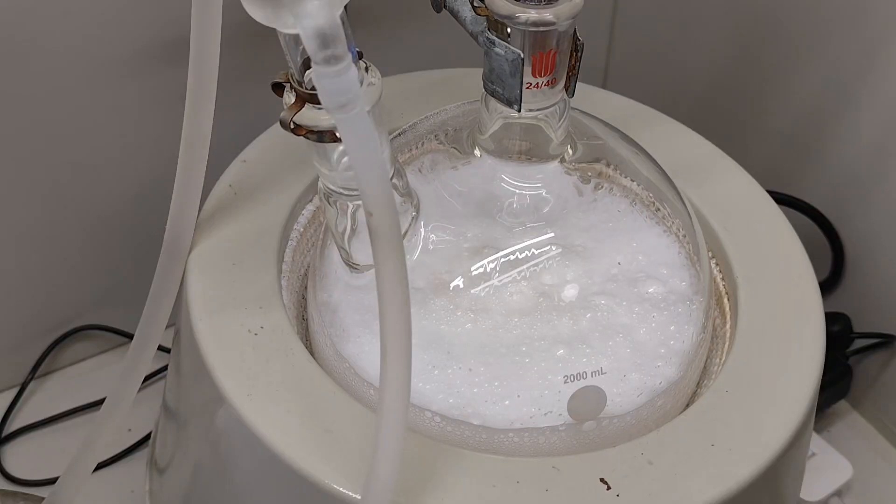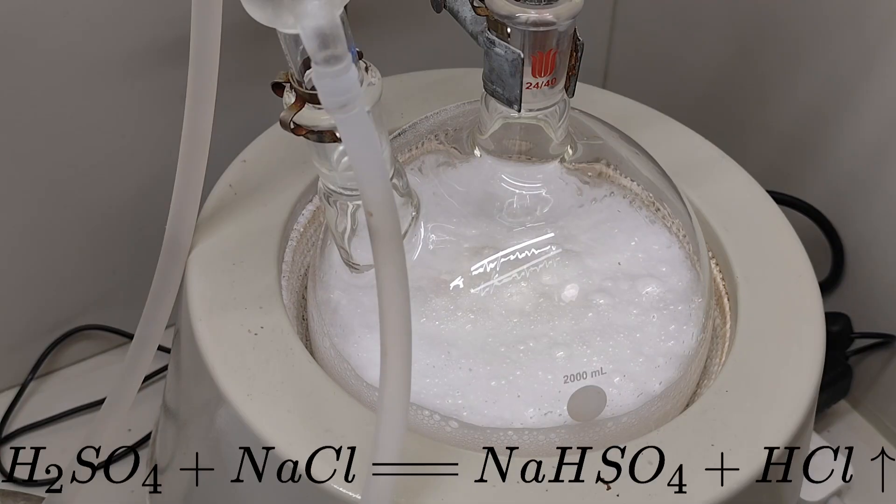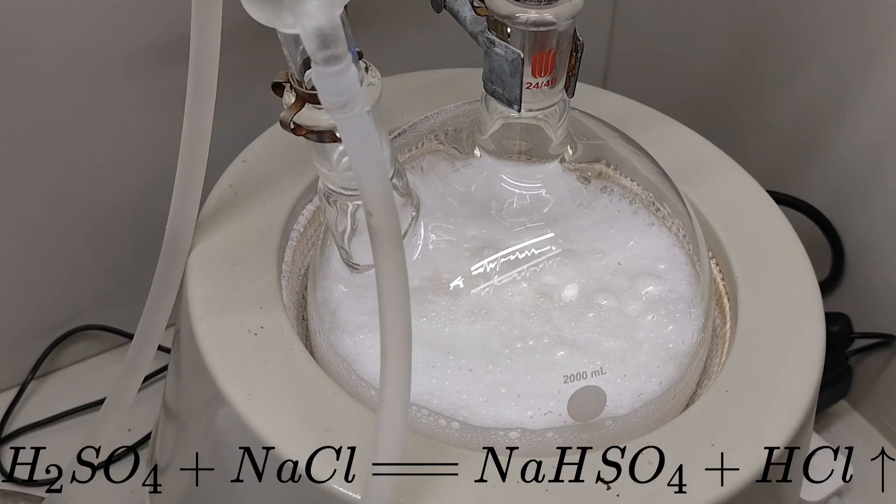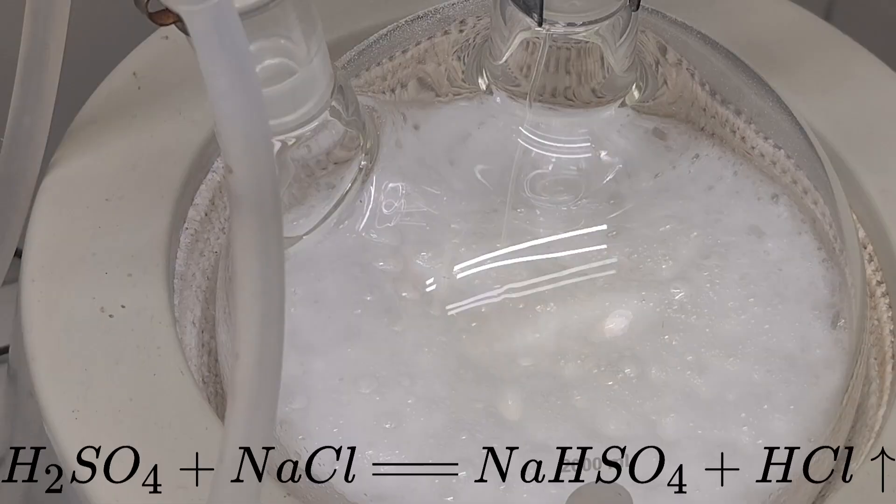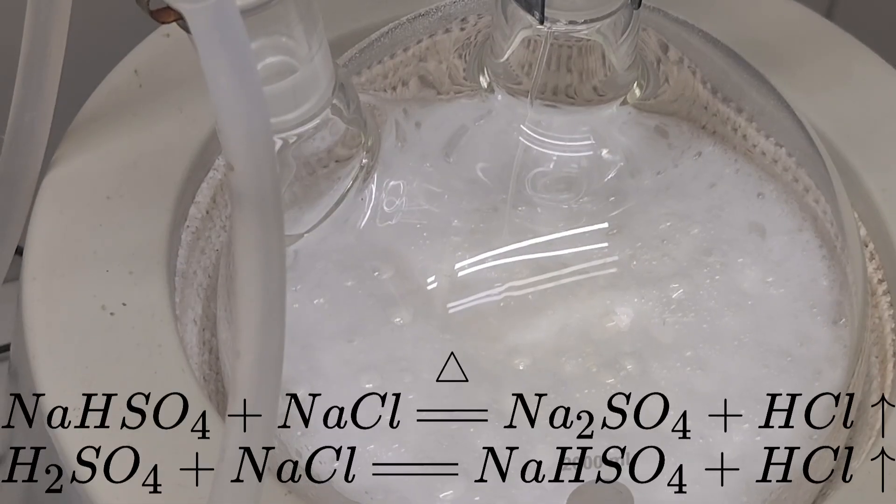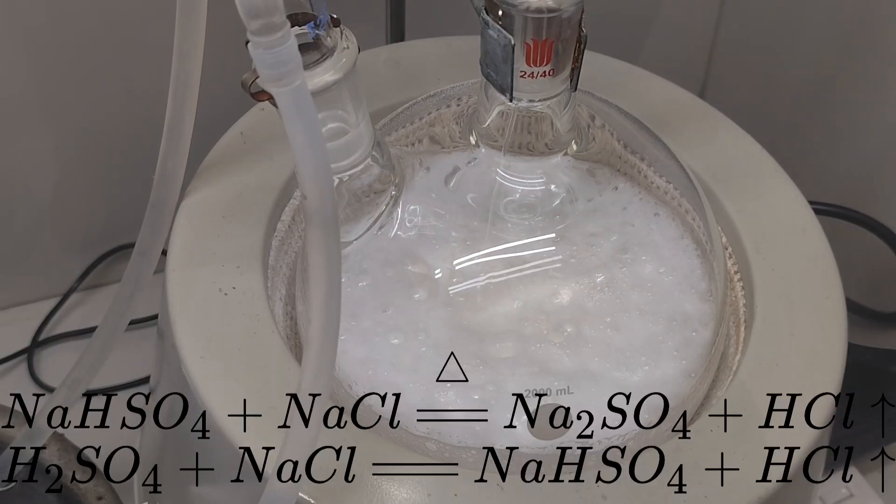The reaction happening here is that sodium chloride reacts with sulfuric acid and forms sodium bisulfate and hydrogen chloride. If the mixture is heated up to over 300 Celsius, the next step is that the sodium bisulfate reacts with sodium chloride and forms sodium sulfate and hydrogen chloride.